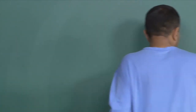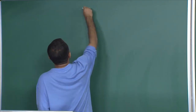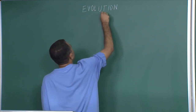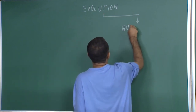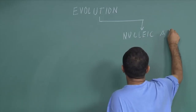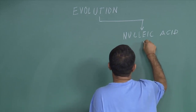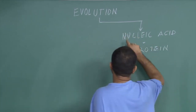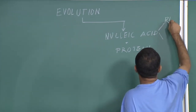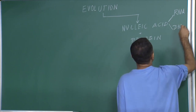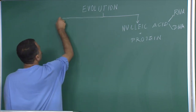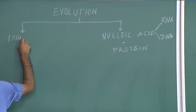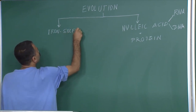If I had to broadly classify the evolutionary theories which are currently debated upon, you will see: one is nucleic acid followed by proteins — we do not know who came from what — and within nucleic acid we talk about ribonucleic acid and deoxyribonucleic acid. This is one theory. The other theory is the iron sulfur theory.